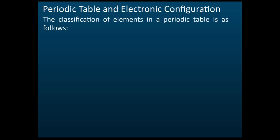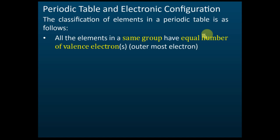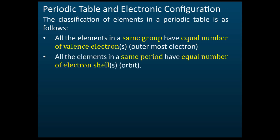The classifications of elements in the periodic table are as follows: all the elements in the same group have equal numbers of valence electrons, and all the elements in the same period have equal numbers of electron shells.